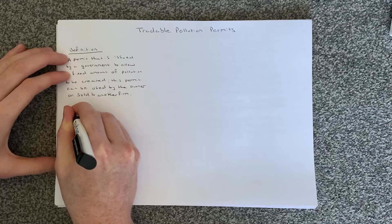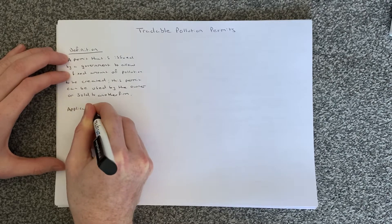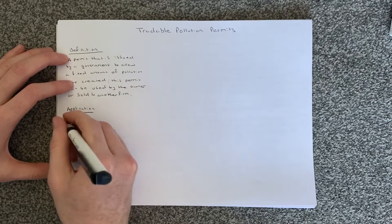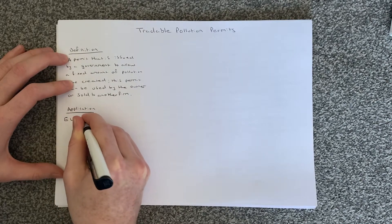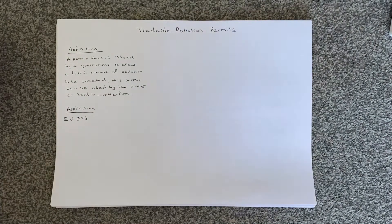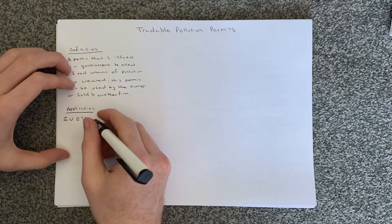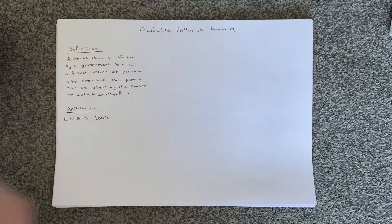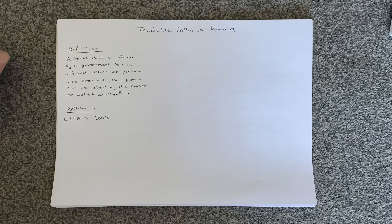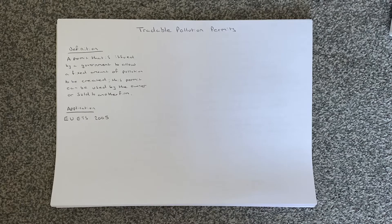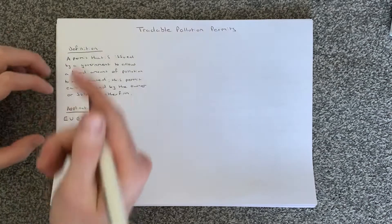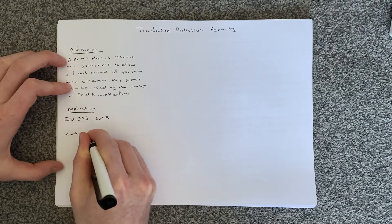We've got a great example of a tradable pollution permit scheme, and that is the EU ETS. The EU ETS stands for the European Union Emissions Trading Scheme, which began in 2005 and is still ongoing. Now we're going to focus on analysing the tradable pollution permit scheme and how it would correct a particular market failure.